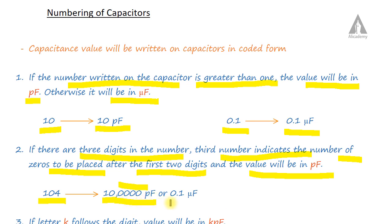So 100000 picofarad means 0.1 microfarad. The third digit indicates the number of zeros to be placed after the first two digits, and the value is in picofarad. That is the second type.